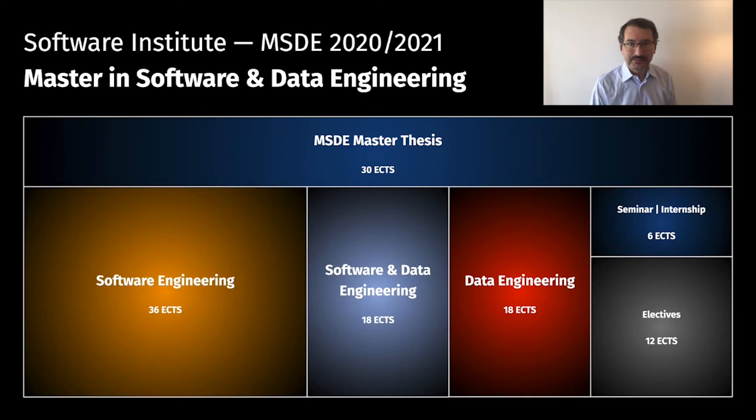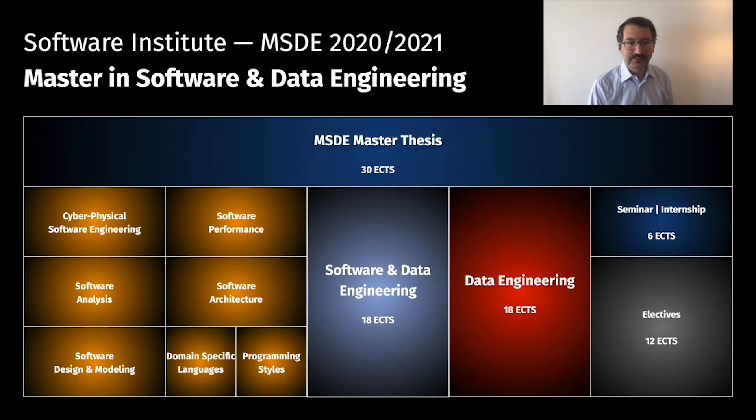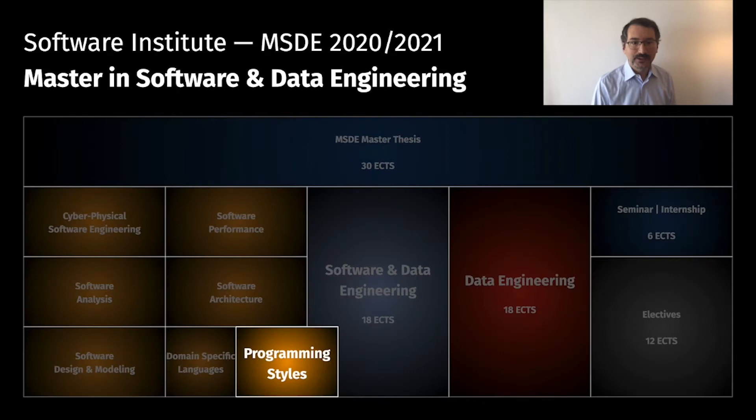Let's take a look in detail at the lectures of the first three semesters. In the software engineering pillar, we start by building a solid foundation with software design modeling, domain-specific languages, and programming style. In the second semester, we have software analysis and software architecture. In the third semester, cyber-physical software engineering and software performance.